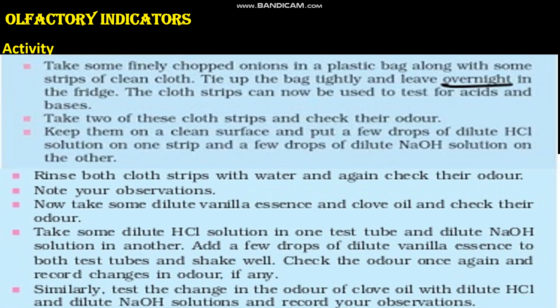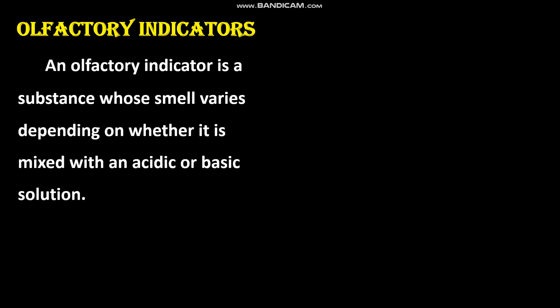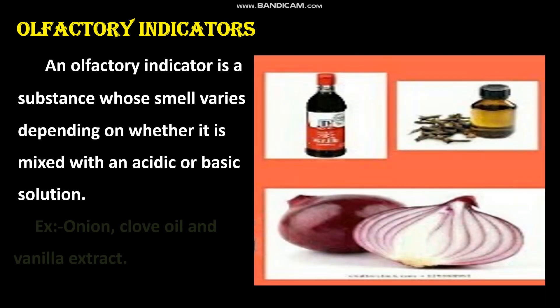Olfactory indicators are those whose smell varies in acidic and basic solutions. An olfactory indicator is a substance whose smell varies depending on whether it is mixed with an acidic or basic solution. Examples of olfactory indicators are onion, clove oil, and vanilla extract.